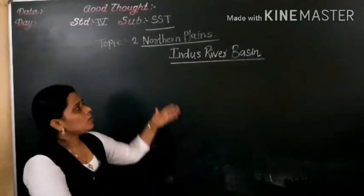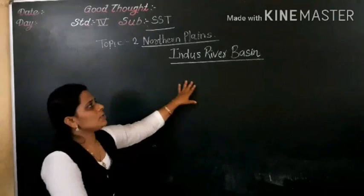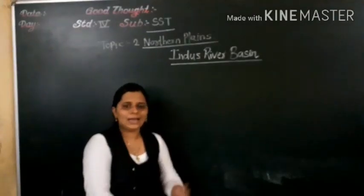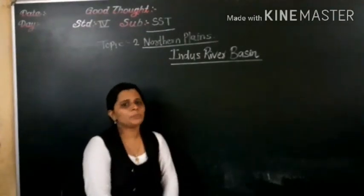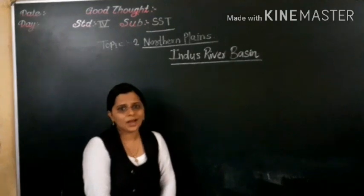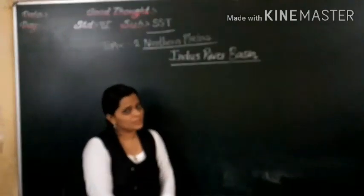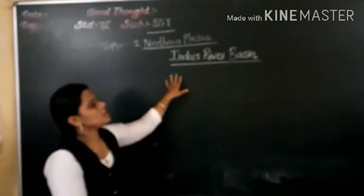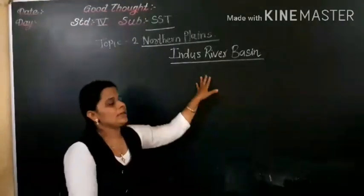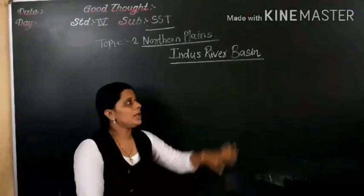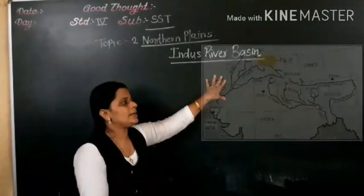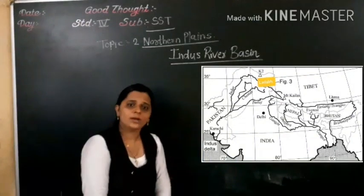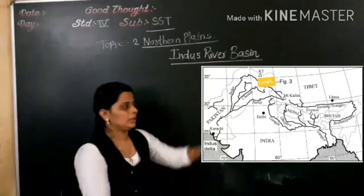Now, how does the Indus river enter India? Last time we talked about the Brahmaputra — how it entered India through Arunachal Pradesh. So this Indus river entered India from Ladakh. From where? From Ladakh.